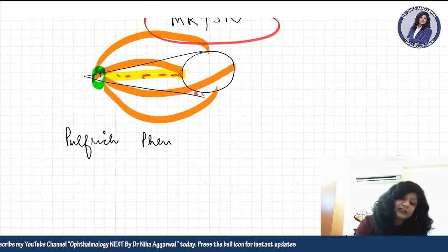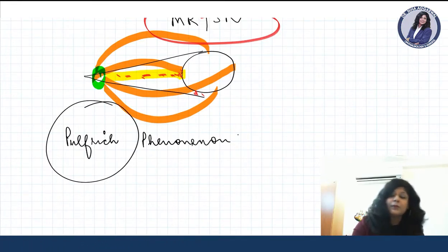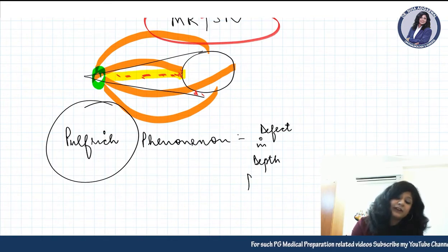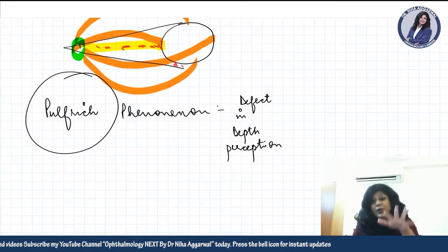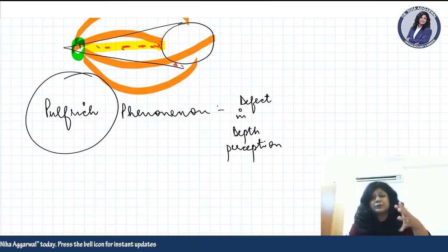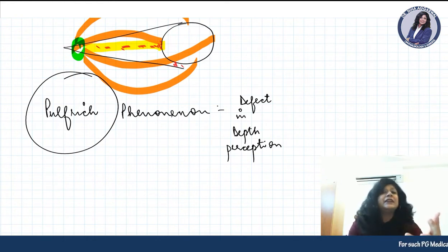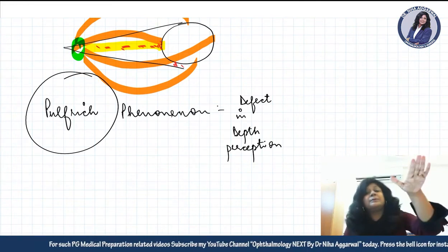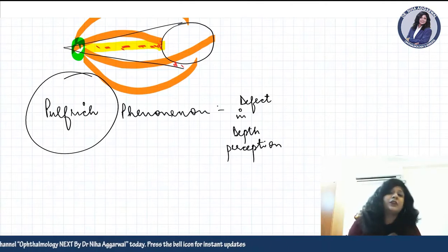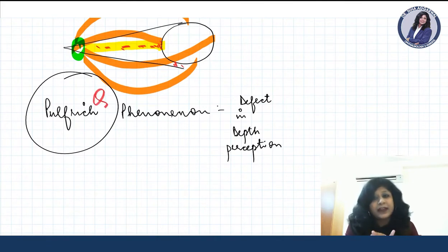Another P is the Pulfrich phenomenon — a defect in depth perception. The person cannot assess the depth of objects or space, causing problems in daily life such as climbing or descending stairs. Direct exam questions can come on both Uhthoff symptoms and the Pulfrich phenomenon.